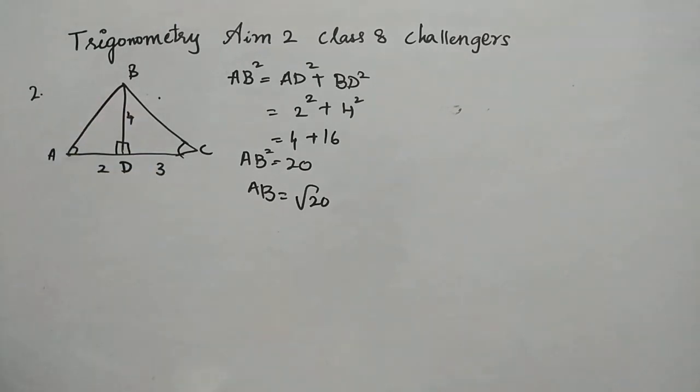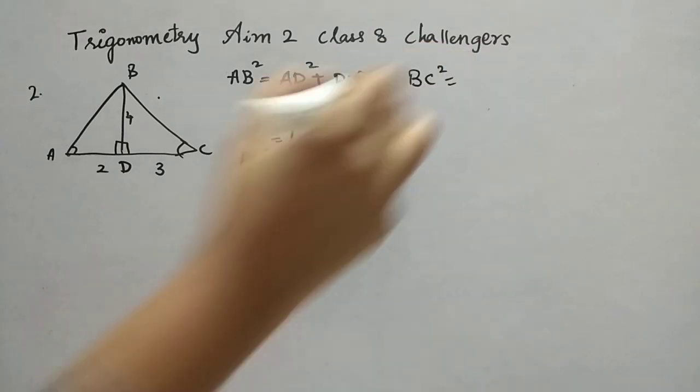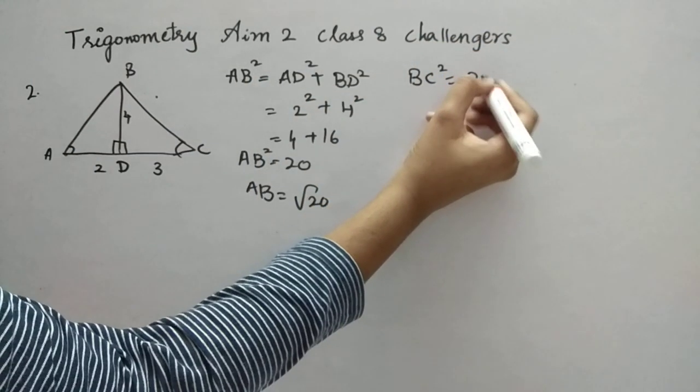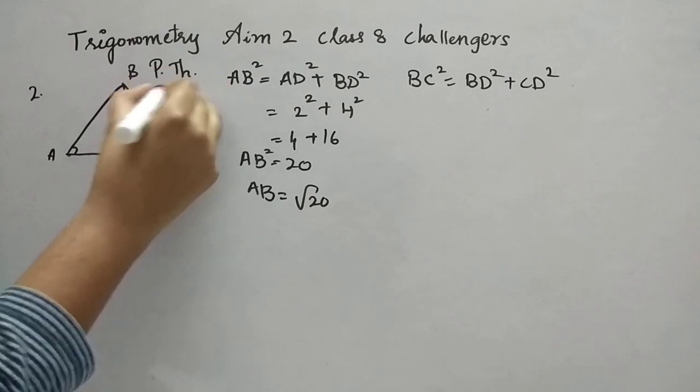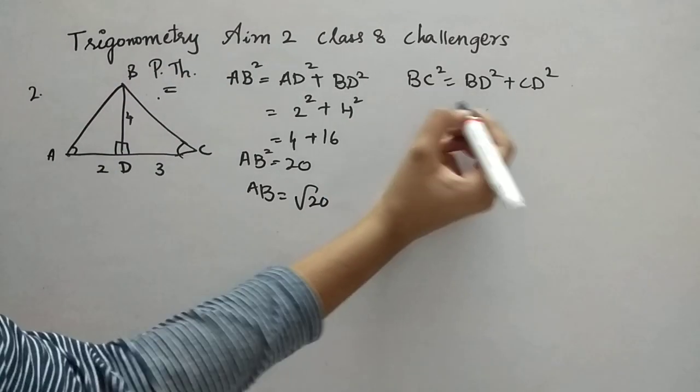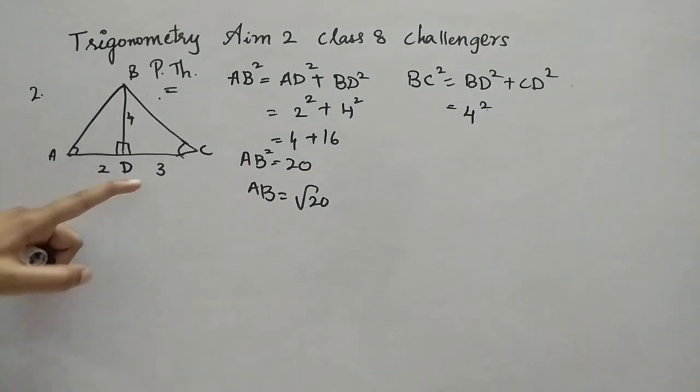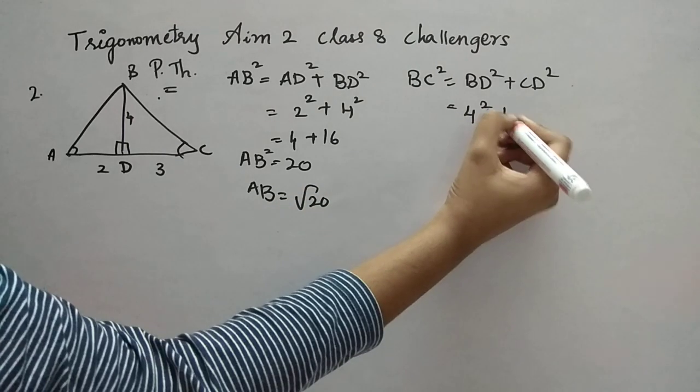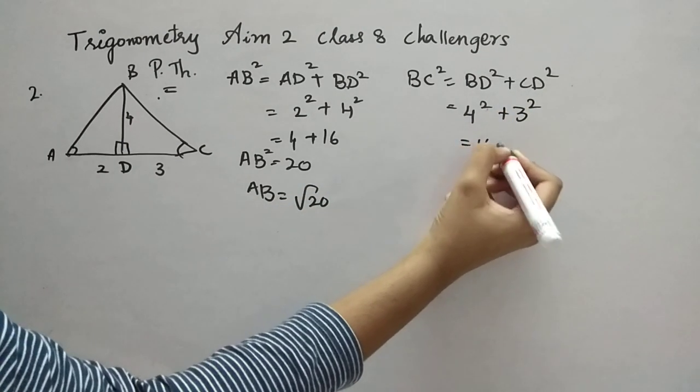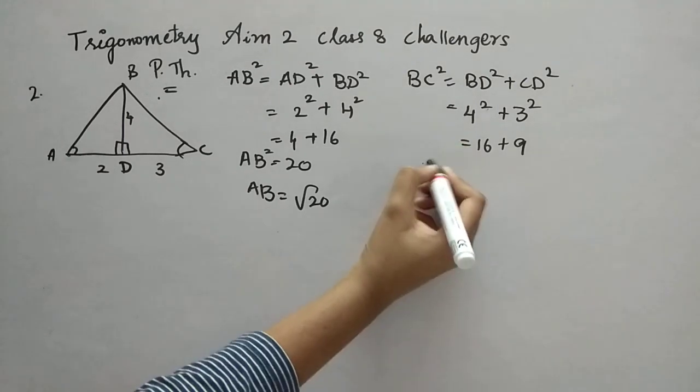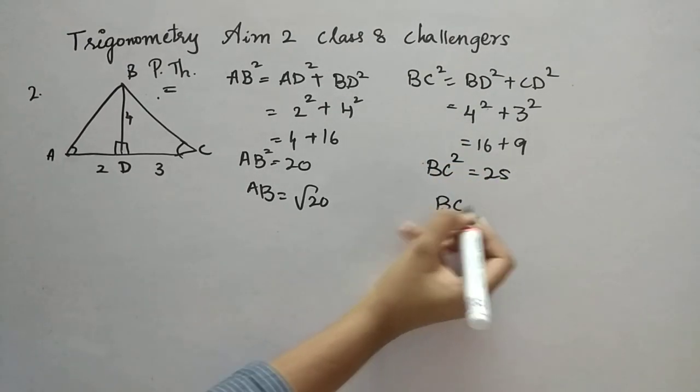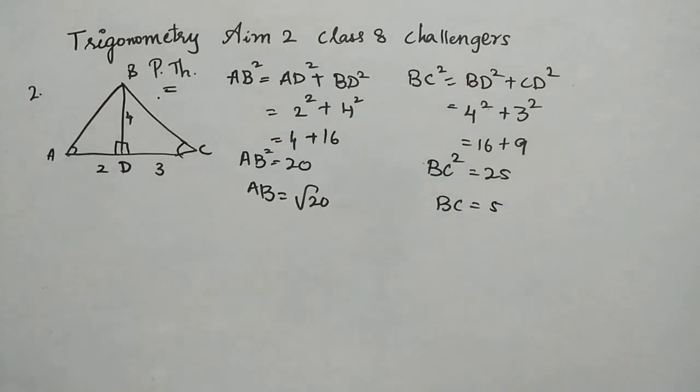Next, now BC or the same way, we have to find it. Let's find that also. BC square is equal to BD square plus CD square. So this is all Pythagorean theorem. We are doing nothing. CD square. So this is 4 square, right? BD square. BD square, 4 square. And CD square, 3 square. So 4 square is 16 and 3 square is 9. Right? Now when you add up, it is going to be BC square is 25. 5, BC is 5. Because the square root goes to RHS, square root of 25 is 5 as we all know that. Now AB to root 20 and this is 5.